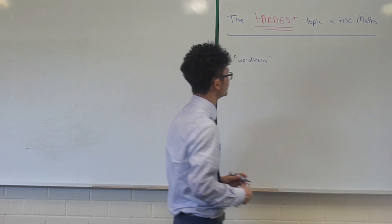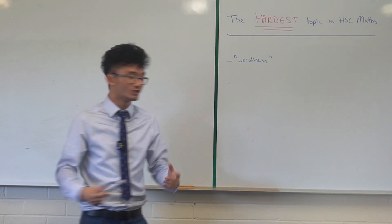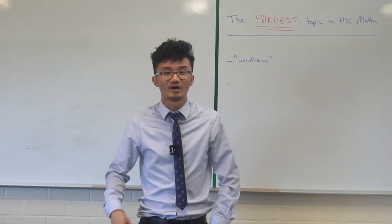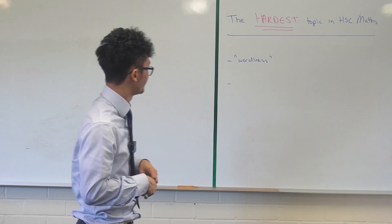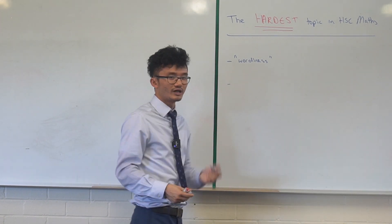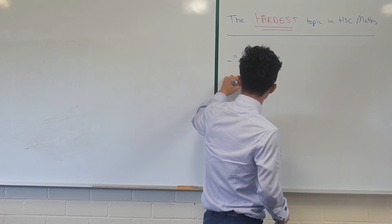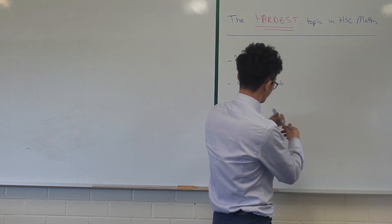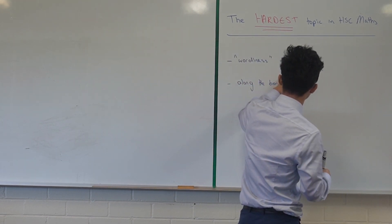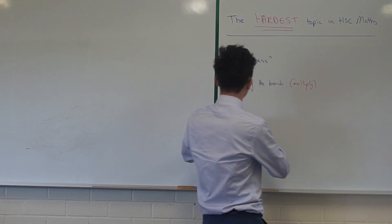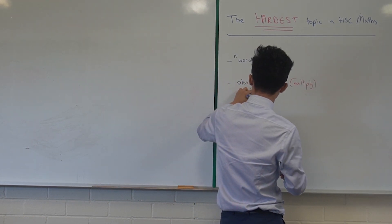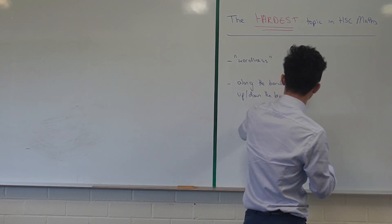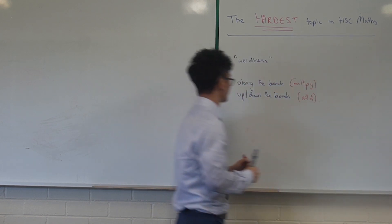In terms of tips to make probability more approachable — and you can skip to a certain course using the timestamps — some general tips first. If you're drawing a tree diagram, to move along the branch you need to multiply, and to move up and down the branch you need to add or sum them.